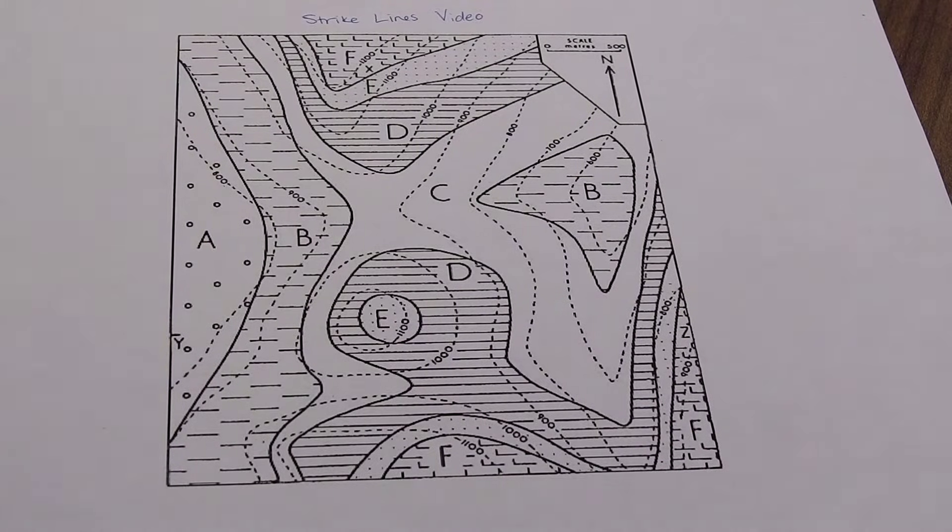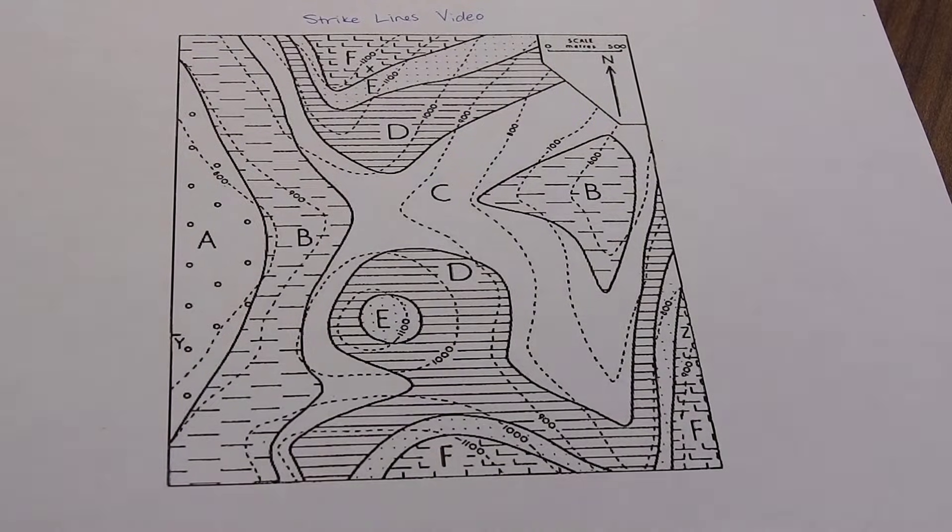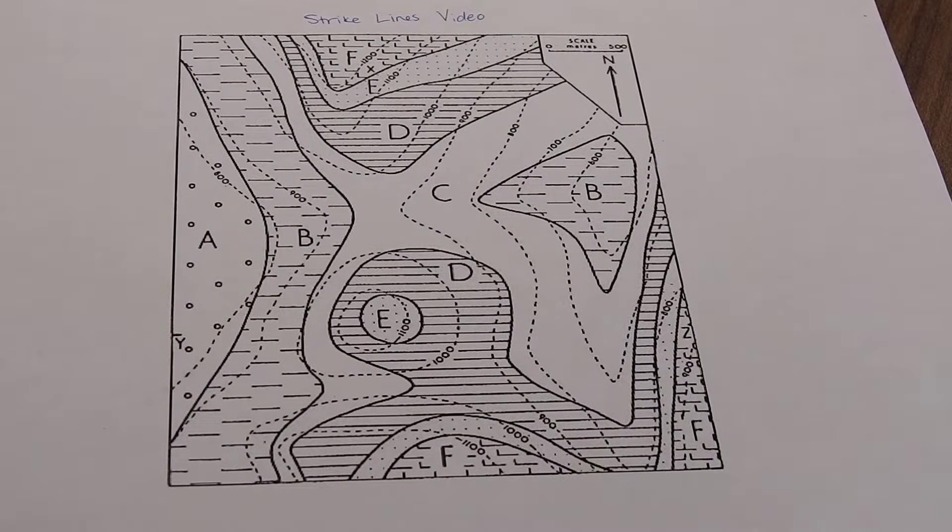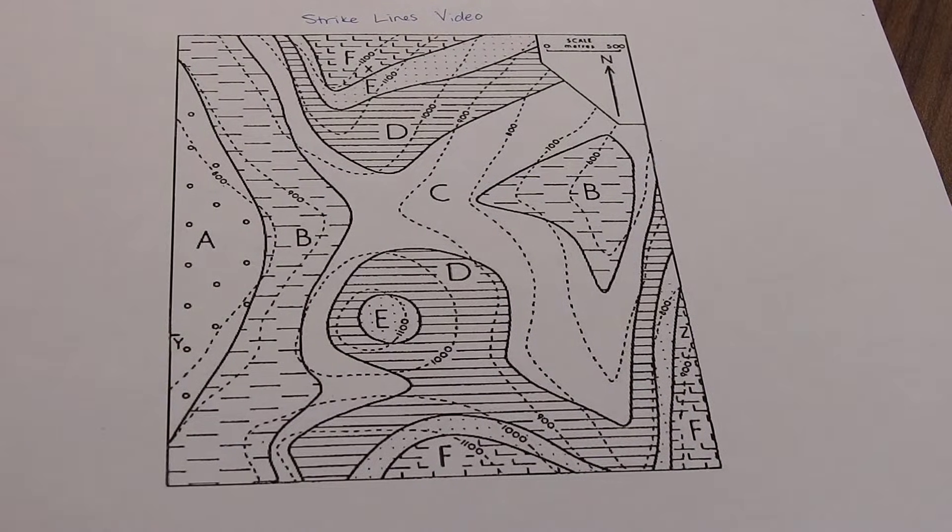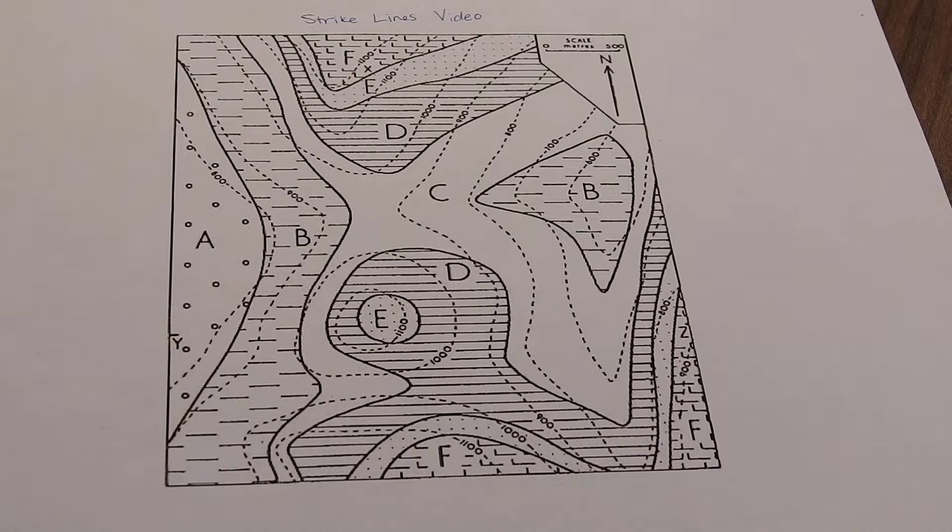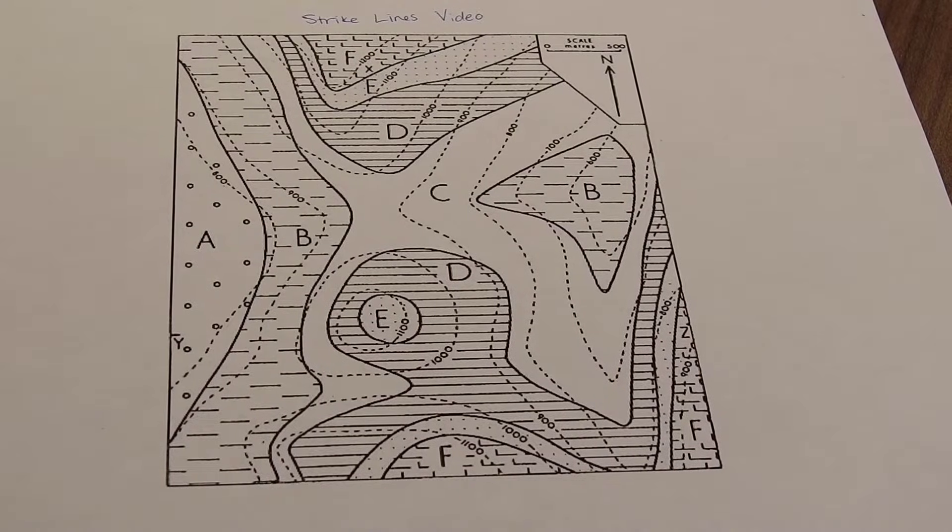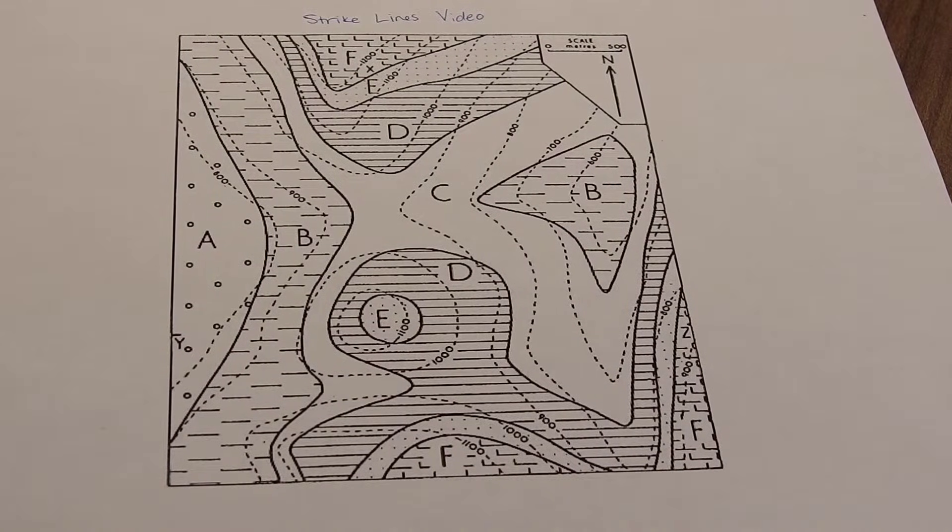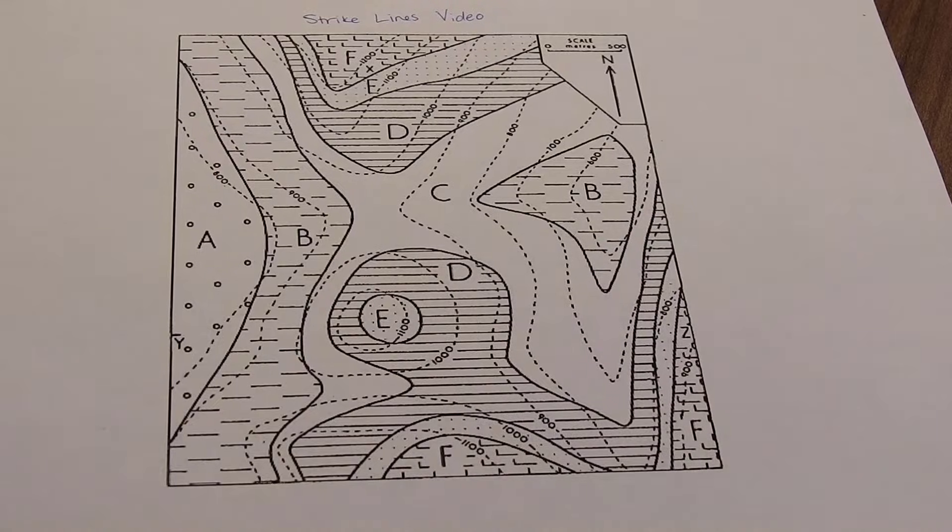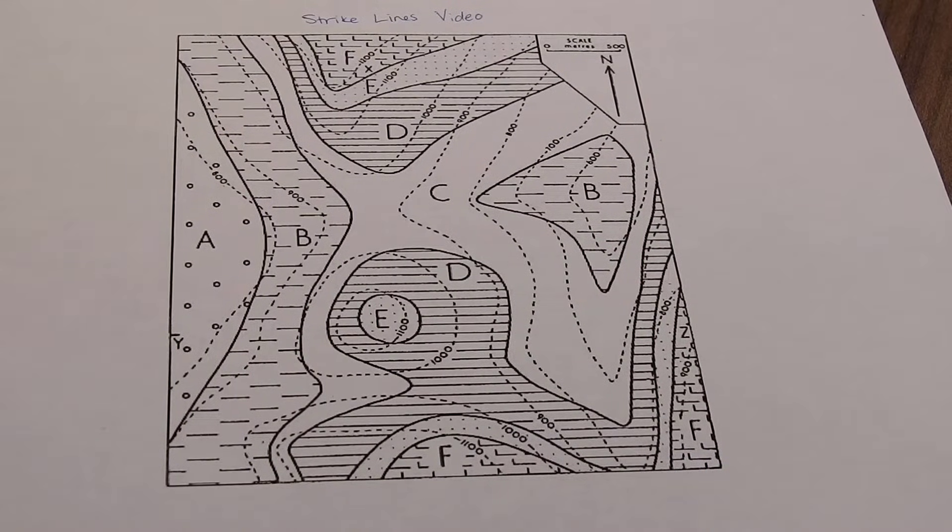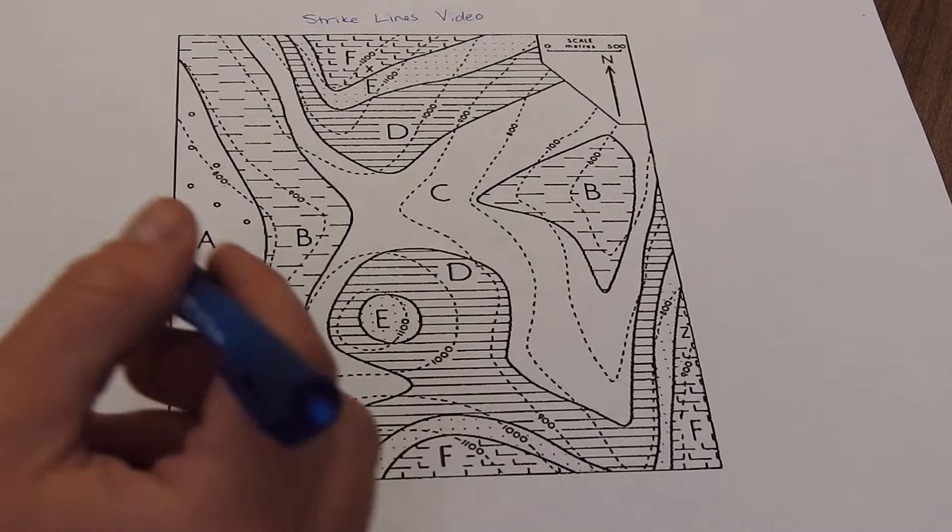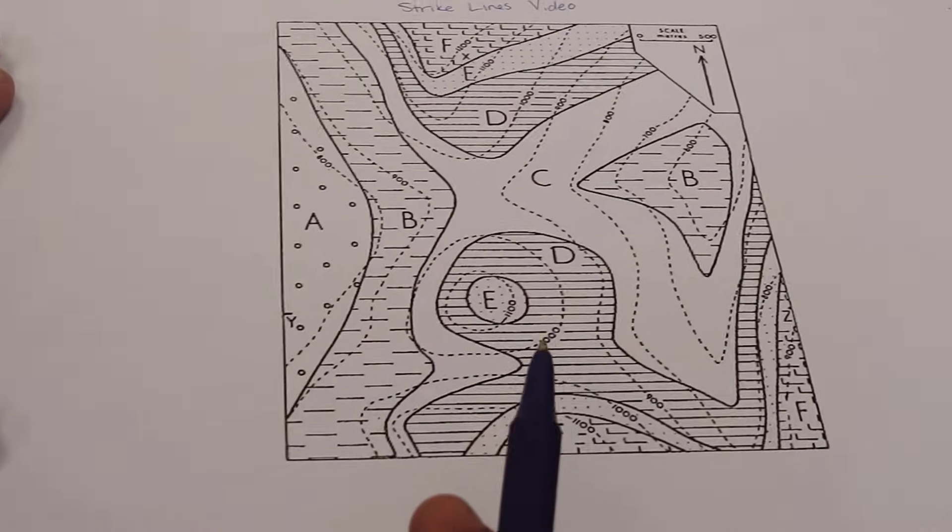Let's say that you are tasked with finding the strike and dip of the contacts between D and C. So what you want to do if you're going to use the strike line method is you're going to try and create at least two strike lines so that you can then measure a true dip. So here's the idea behind a strike line.